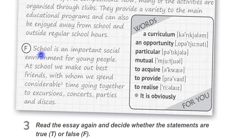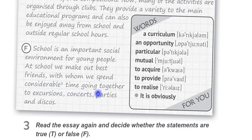After the home, school is the main social environment for young people. At school, we make our best friends, with whom we spend considerable time going together to excursions, concerts, parties, and discos.